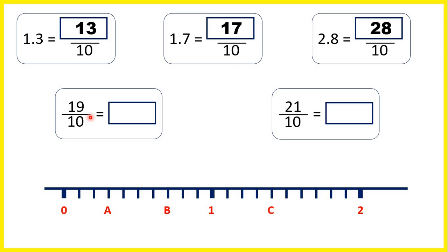Now we need to change improper fractions with tenths into decimals. If we have 19 tenths, we can make 1 whole from 10 of those tenths, and then we have another 9 tenths left over. So that's 1.9.